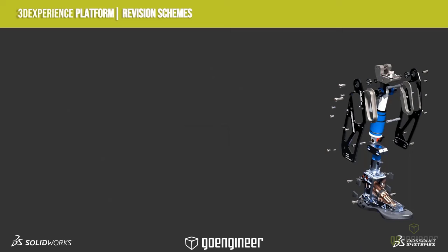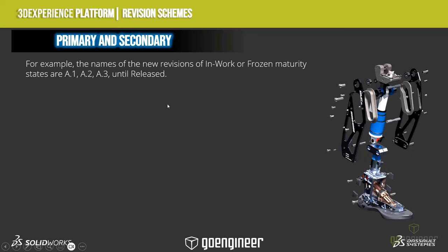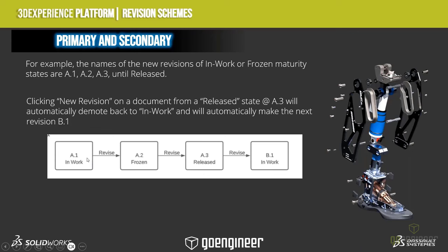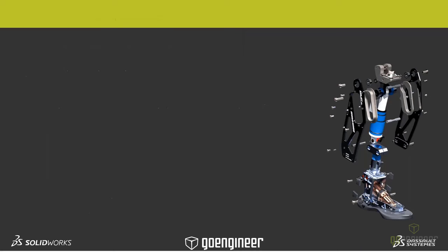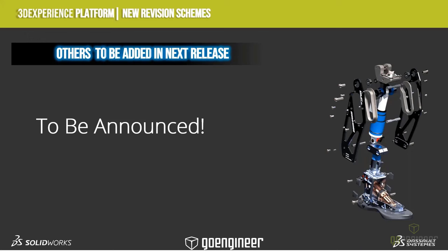A better example with primary and secondary: as I put something into the system, it goes into in-work. I work on it, and I might along the way say, 'Give me a new revision — I like what I've got and might want to go back to it.' So it becomes A.2 as I go through any of these processes — either automatically or manually promoted or demoted. The main reason to use the primary-and-secondary revisioning scheme, and probably why it's the most popular, is to identify design iterations as you go along. New revision schemes will be added as the platform gets updated quarterly — the next release in June should have some more.